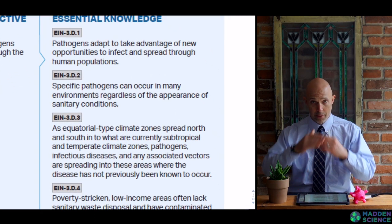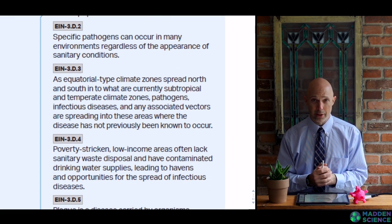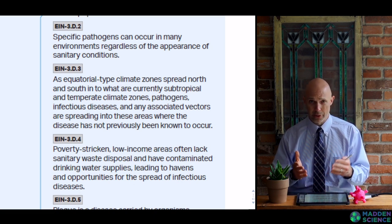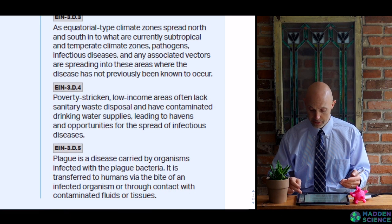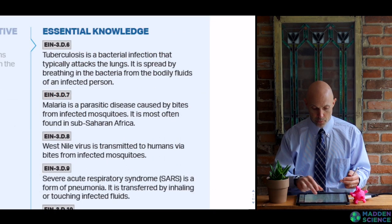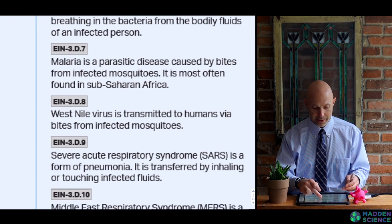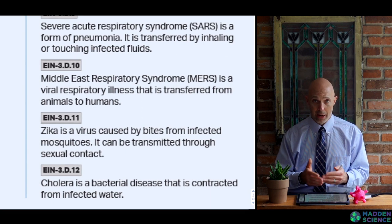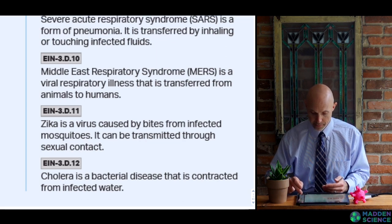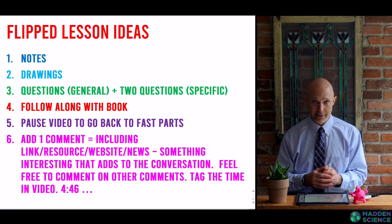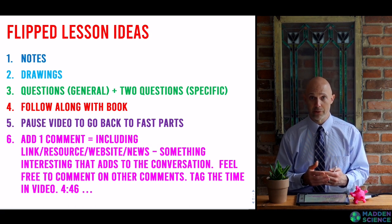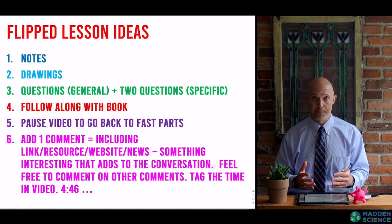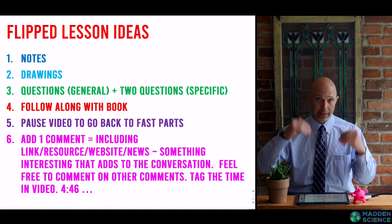We'll look at specific pathogens, where they occur, and their connection to the environment, including climate zones branching from the equator north and south. We'll touch on the connection between the developing and developed world — poverty and low-income areas — with regard to sanitary waste disposal. We'll cover plague, tuberculosis, malaria, West Nile, SARS, MERS, Zika, cholera, HIV, and COVID-19. As always, our flipped lesson ideas are in place: take notes, make drawings, ask questions, and add one comment below with something interesting related to our topic.